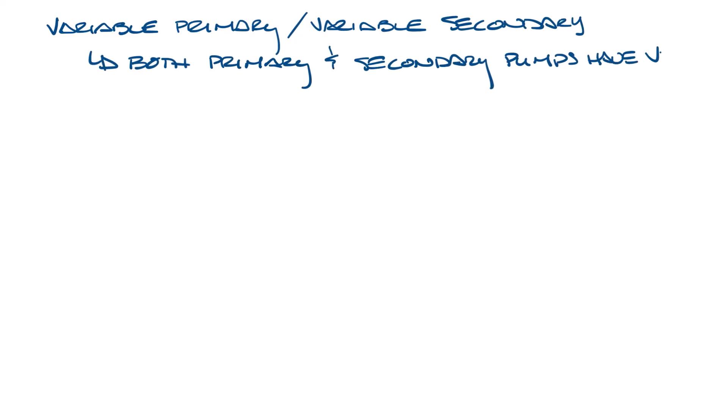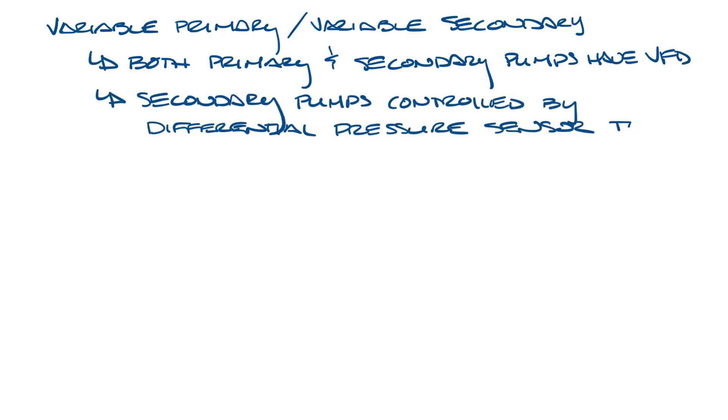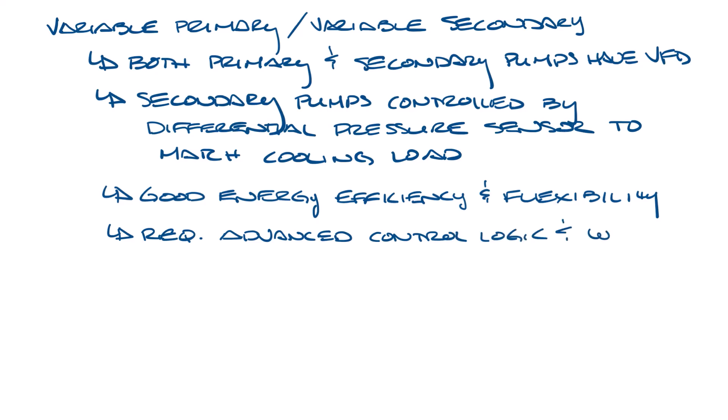Let's move this up one more time. Then we have the variable primary variable secondary system. In this system, both the primary and secondary pumps have a VFD to vary the flow. The secondary pumps are controlled by a differential pressure sensor to match the cooling load. These systems have good energy efficiency and flexibility, but they do require advanced control logic and well-placed sensors to make it all work correctly.